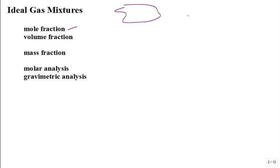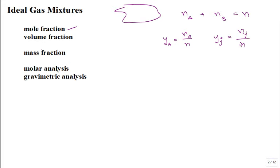The first description: what is a mole fraction? You have an ideal gas mixture made up of so many moles of component A and so many moles of component B. Add them together and you have the total amount. The mole fraction is the amount of A divided by the total amount. Y is the chosen symbol for mole fraction, so the mole fraction of component J is N_J divided by the total N. If you sum all the mole fractions over all J's, by definition it has to be one.